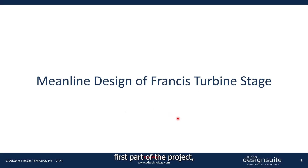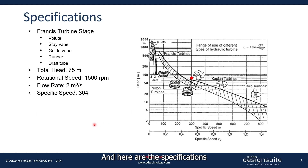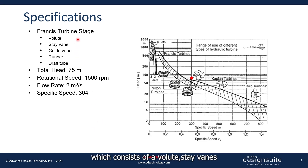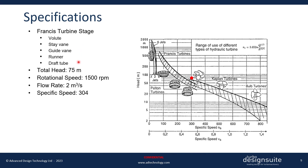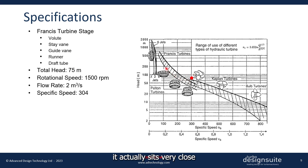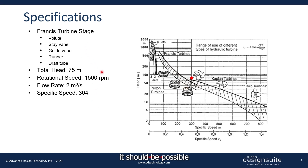Let's start with the first part of the project: mean line design of the Francis Turbine stage. Here are the specifications for the stage, which consists of a volute, stay vanes, guide vanes, runner, and a draft tube. From these specs we can see that it sits very close to the Francis Turbine band, which means that using these specs it should be possible to design a Francis Turbine stage with a reasonably high efficiency level.